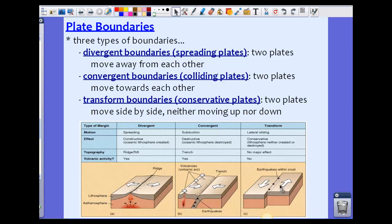We also see the transform boundary. Notice how they're sliding past each other but not really moving up or down. We see a lot of earthquakes at these boundaries, not so much volcanic activity. They're called conservative plates because the lithosphere, the crust, is neither created or destroyed. It's just sliding past each other.